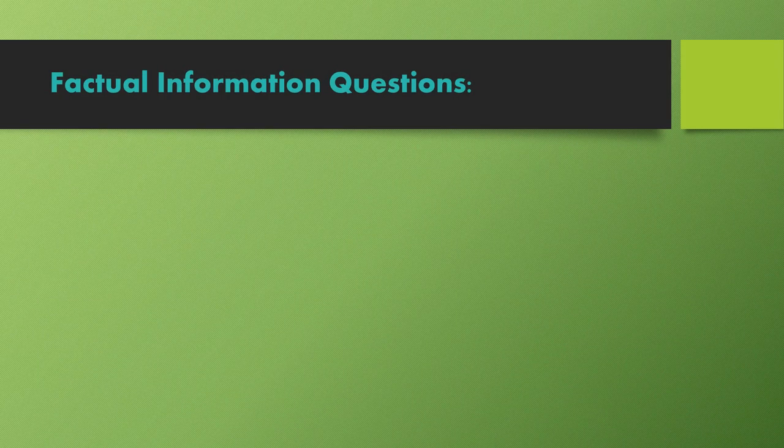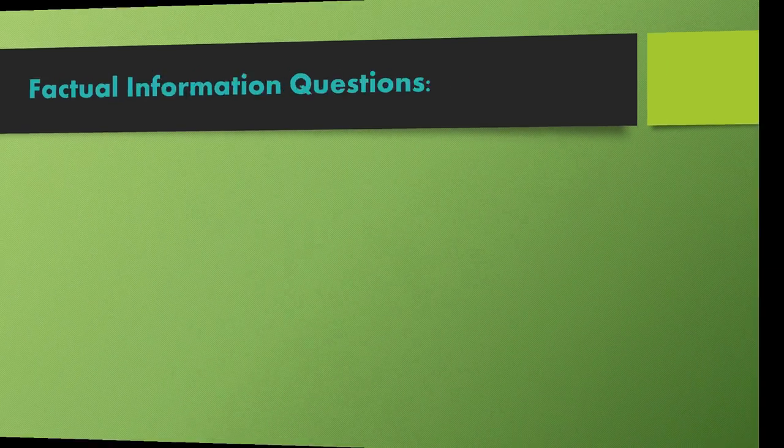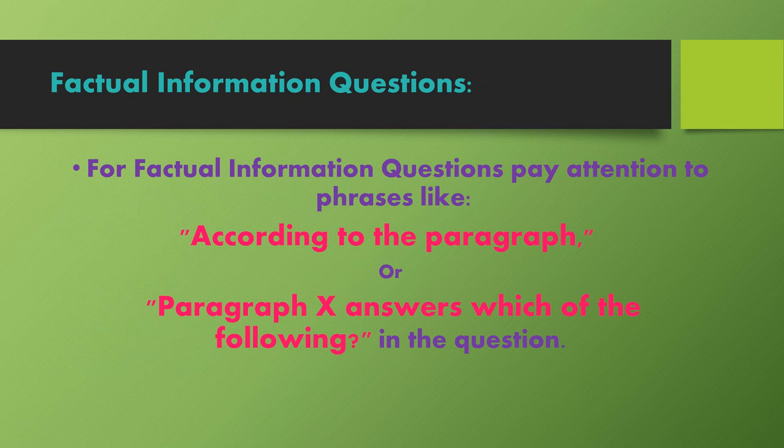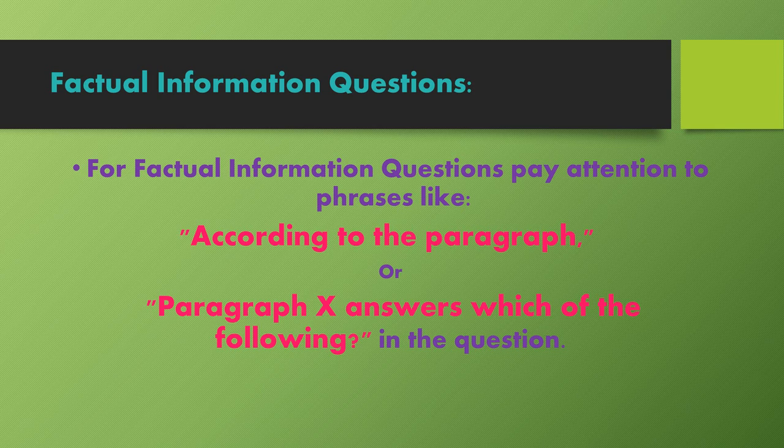We will now move on talking about Factual Information Questions. They are similar to the previous type because they ask you to recognize information that is explicitly stated in the text. This may include facts such as major ideas, supporting details, or definitions. Factual Information Questions will have phrases like 'According to the paragraph' or 'Paragraph X answers which of the following' in the question.